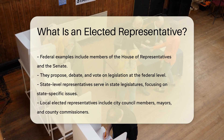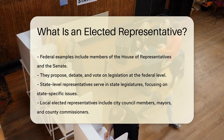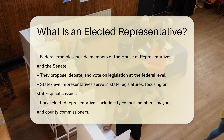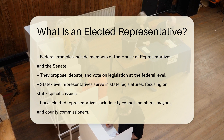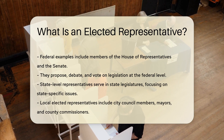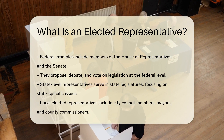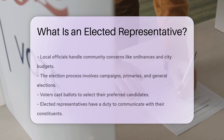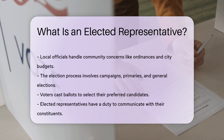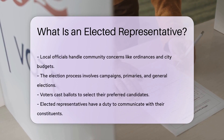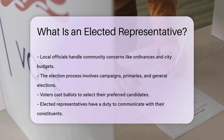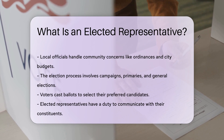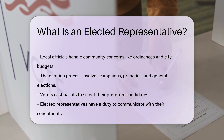At the state level, elected representatives might serve in state legislatures, which are similar to the federal Congress but focus on state-specific issues. Local elected representatives can include city council members, mayors, and county commissioners. These officials handle community-level concerns, such as local ordinances and city budgets.